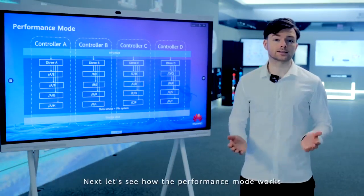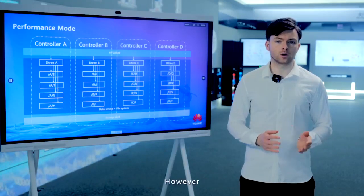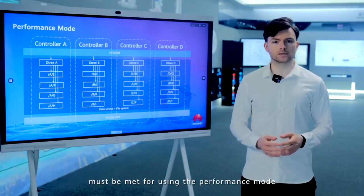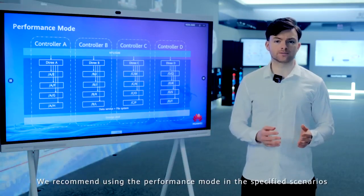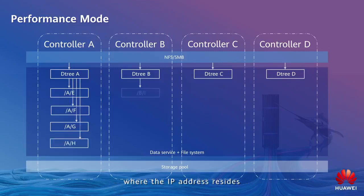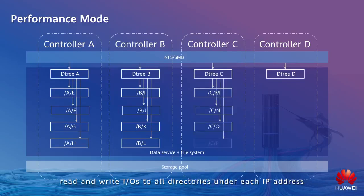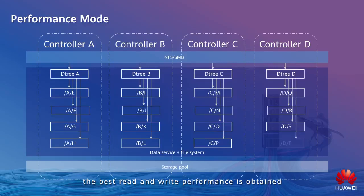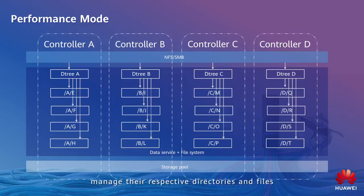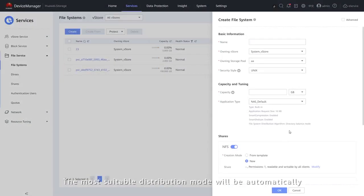The performance mode helps maximize the read and write performance of OceanStore Dorado. However, certain requirements on IO modules must be met, so we recommend using the performance mode in specified scenarios. Each level 1 directory and its sub-directories are mounted to the same controller where the IP address resides and distributed to the FSPs on that controller. In this way, read and write IOs to all directories under each IP are not forwarded, and the best read and write performance is obtained. This mode meets the demands of high performance in scenarios where all clients manage their respective directories and files. OceanStore Dorado provides scenario-based best practices, and the most suitable distribution mode will be automatically set for a file system according to the application type selected.